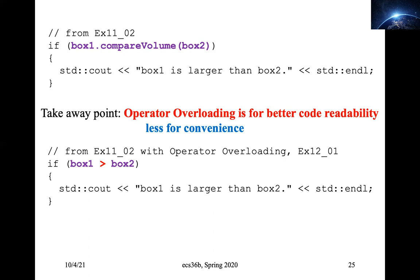A student noted you can read the compare function name directly. Because 'box one' doesn't say anything about what property is being compared — it's kind of arrogant; it assumes everybody knows that must be some particular method the whole team uses.